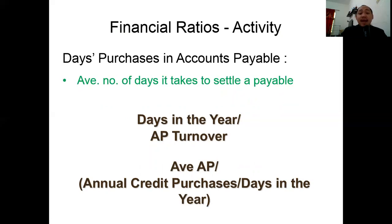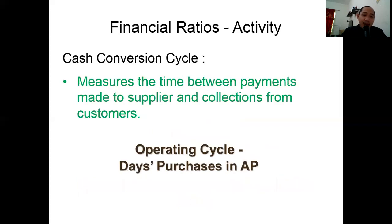Days purchases in accounts payable is the number of days it takes to settle a payable. The formula is: days in the year divided by accounts payable turnover. Accounts payable turnover itself is calculated as average accounts payable divided by annual credit purchases, divided by days in the year. As stated, days in the year is 365 days.